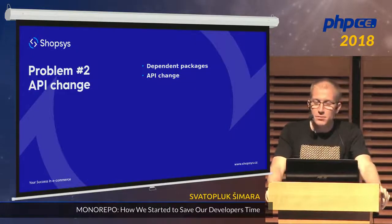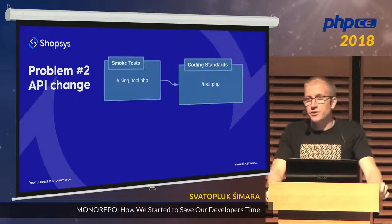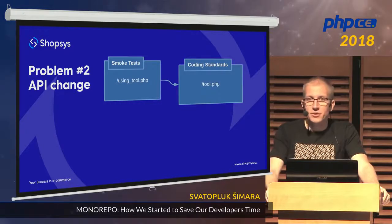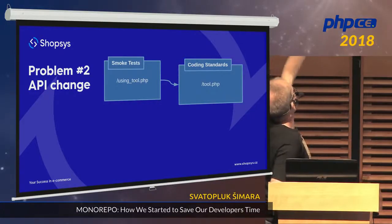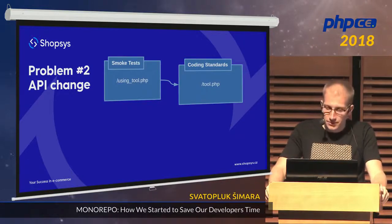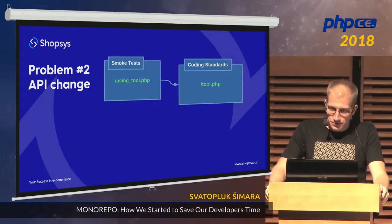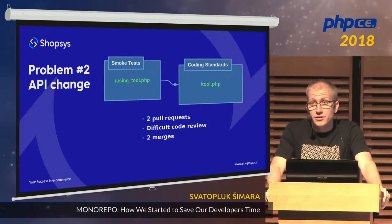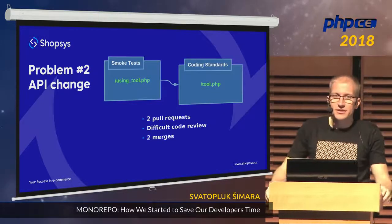Another problem: if you have dependent packages and you want to change the API of one of them. We have our smoke tests, and all our packages depend on coding standards. If we want to change the tool — add a parameter, remove a parameter — we change the tool and also change the place where it's used. Now we have two pull requests, and code review is quite difficult because what's done in one PR is used in another. It's not an easy task to review.